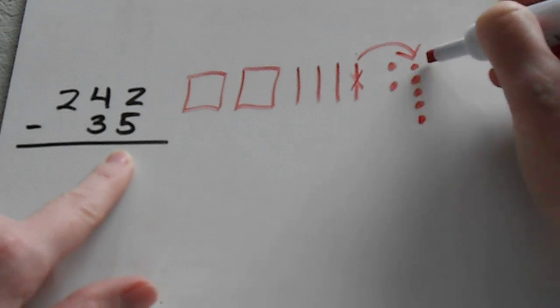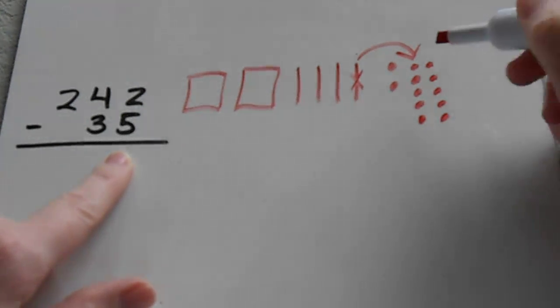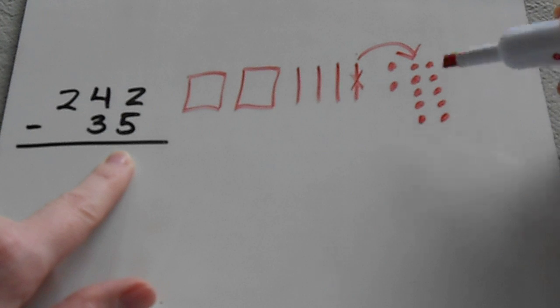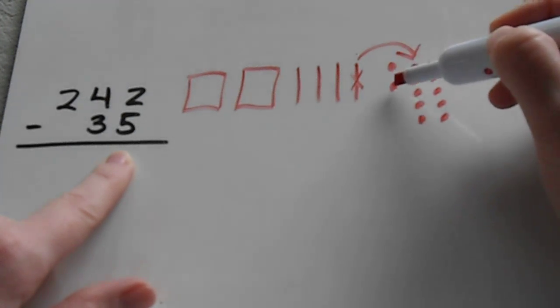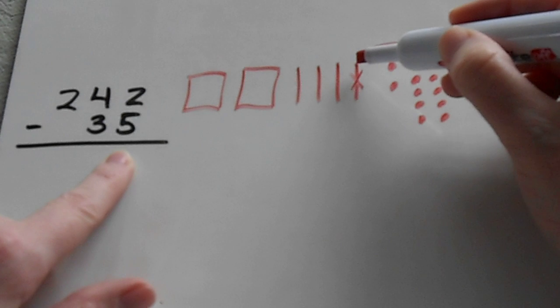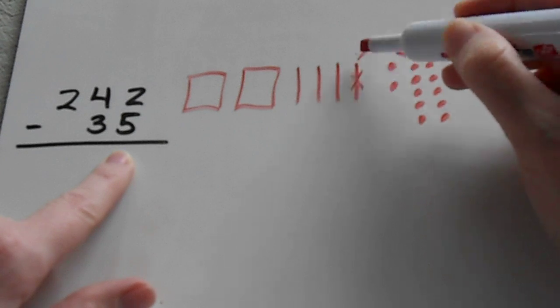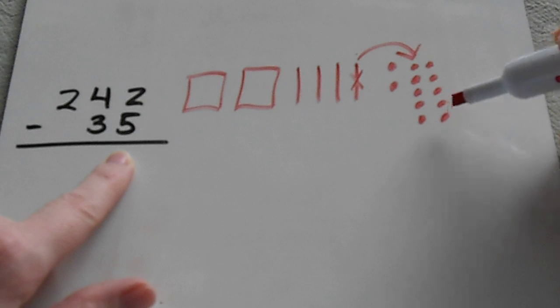Be careful with students that want to just make the whole ones place equal ten. So what I mean is since there was already two here, they might just add eight more to make ten total. But that's not really what this means. This whole thing stands for ten, so no matter what you already have here, you're putting in ten more ones here.